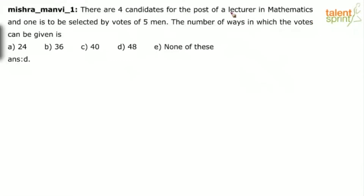There are four candidates for the post of a lecturer in mathematics and one is to be selected by votes of five men. So basically there are five voters and each person will vote for any one of these four candidates. In how many ways can the votes be given?